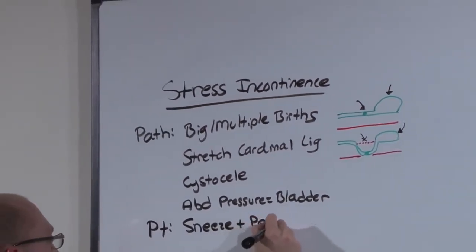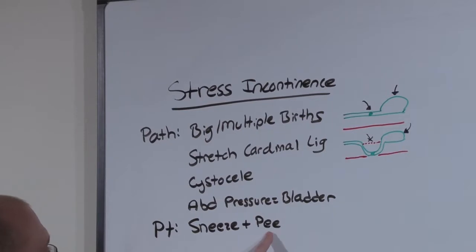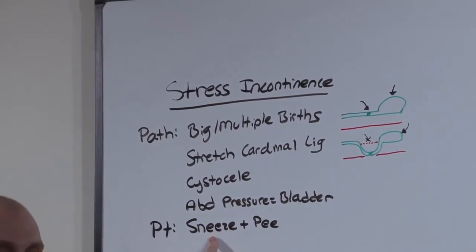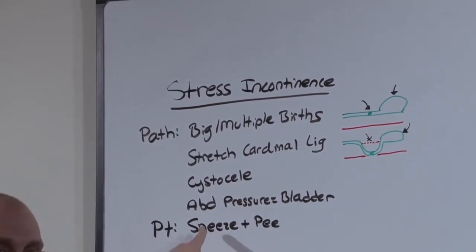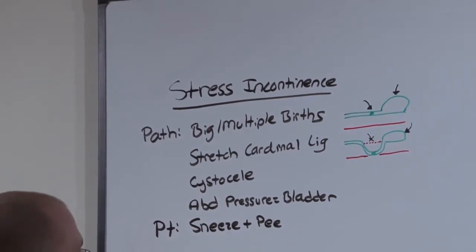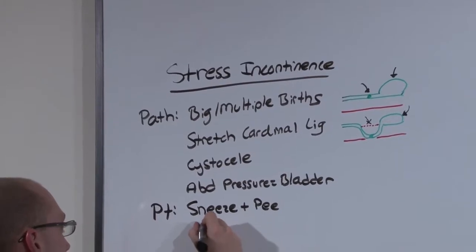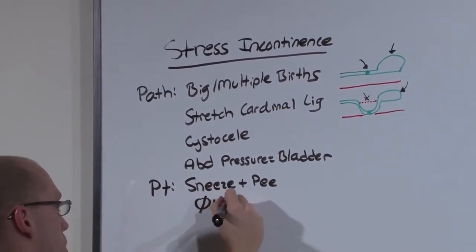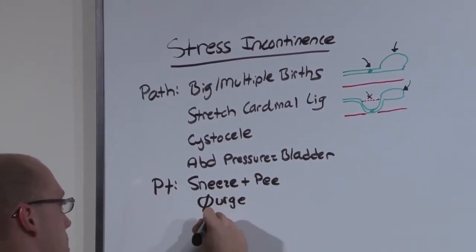The patient will complain of a brief loss of urine when intra-abdominal pressure increases, when she sneezes, when she coughs, when she plays tennis. Anything that increases the intra-abdominal pressure is going to cause her to lose a little of the urine. This loss of urine will not be associated with the urge to void, and it is not nocturnal.